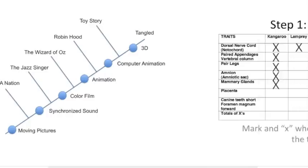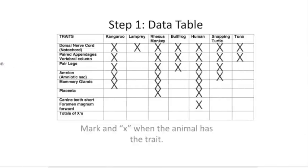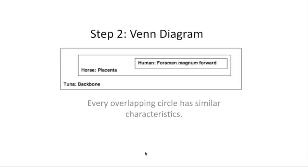Now let's look at how this works with organisms. You'd fill out a similar table of characteristics for organisms, then total the X's to put them in order from how they might have evolved over time. Sometimes it's easier to go from the X table to a Venn diagram before drawing the cladogram, and you can use a Venn diagram to help make that transition.